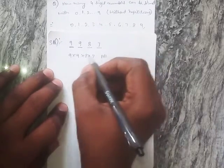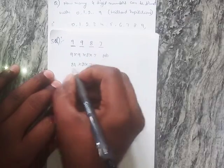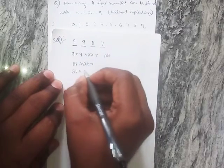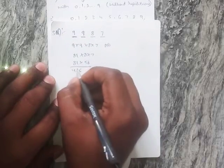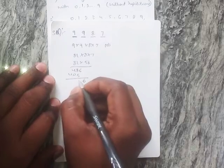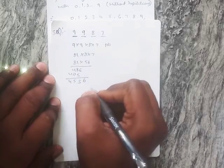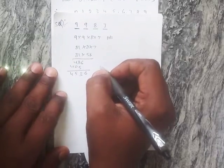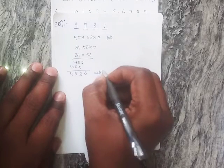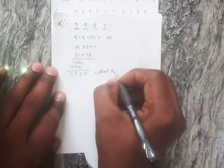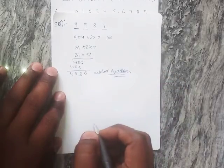That is 9 × 9, which equals 81, times 8, times 7. 81 × 8 × 7 equals 4,536. There are 4,536 possibilities of four-digit numbers without repetition. Thank you.